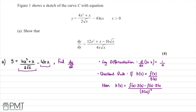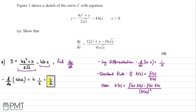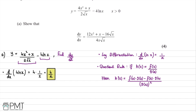For the ln term: d/dx[4·ln(x)] = 4 × (1/x) = 4/x. We box this result to use later. For the fraction (4x² + x)/(2√x), we use the quotient rule with f(x) = 4x² + x and g(x) = 2√x.